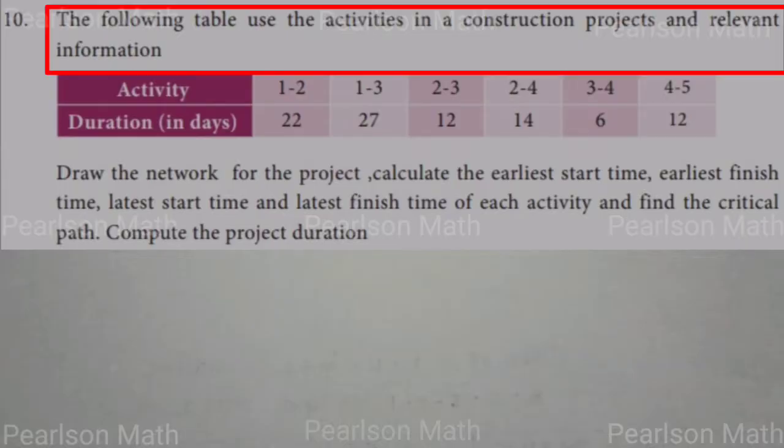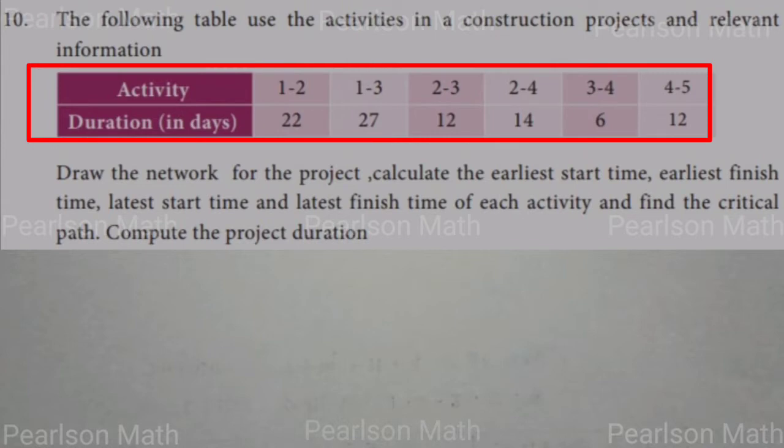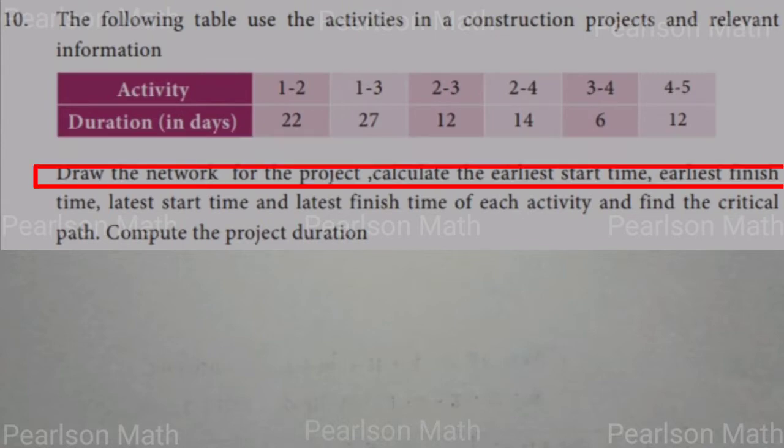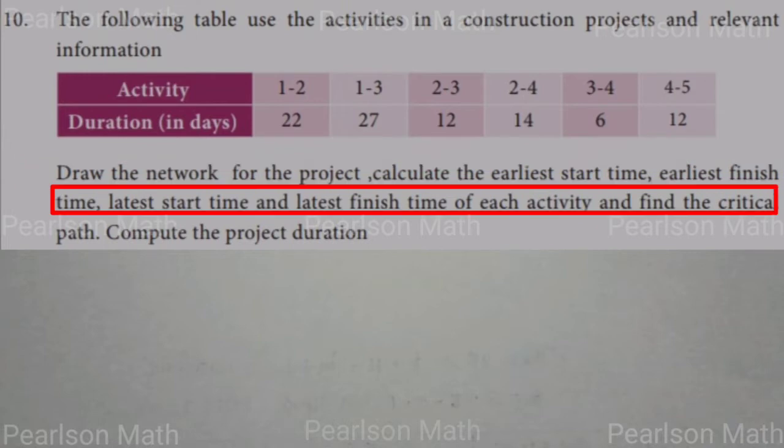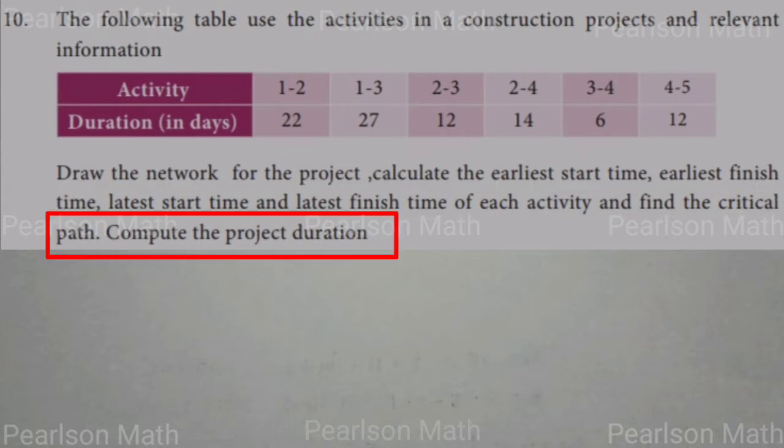Exercise 10.2, 10th problem. The following table uses the activities in a construction project and relevant information. The tabular column shows activity duration. We want to draw the network for the project, calculate the earliest start time, earliest finish time, latest start time, and latest finish time of each activity, and find the critical path. Compute the project duration.